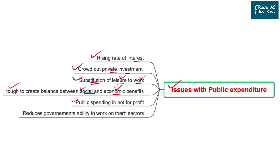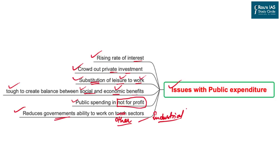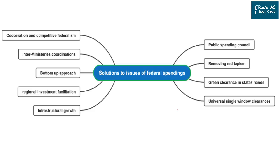Public expenditure is not for profit — its basic purpose is to create demand in the economy, protect or recover the economy from slumps or depression, and provide employment. It is not at all involved in competitive production activities. The last limitation is that high public expenditure reduces the government's ability to work on other sectors such as industry. For example, the funds spent on health and education during the pandemic have considerably reduced what was available to the industrial sector.